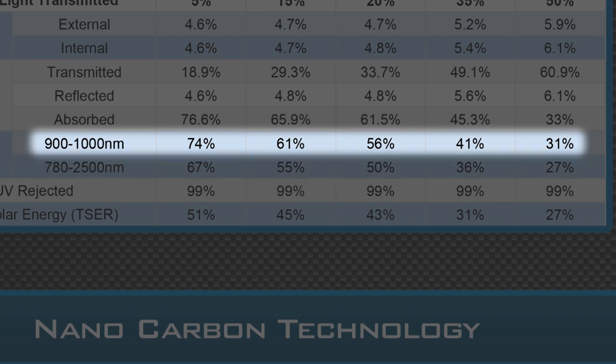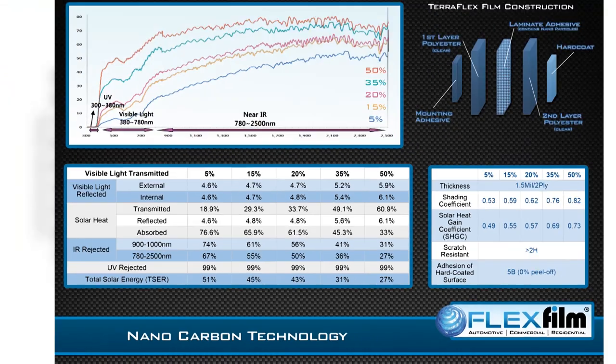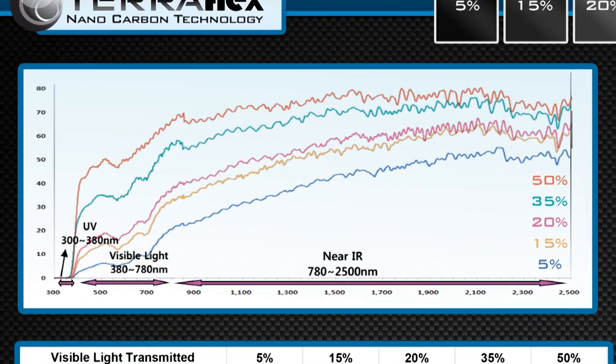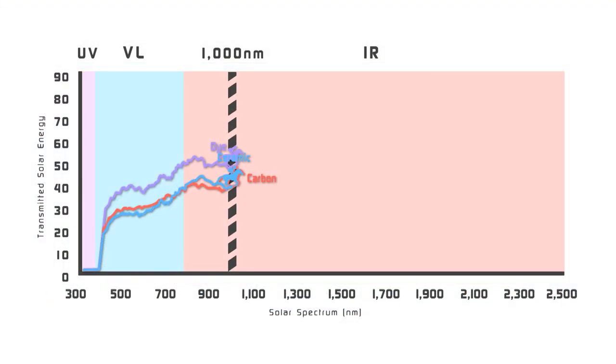The only way we can accurately evaluate the performance of automotive window film without being misled is with a graph, because we can see the whole picture. We don't have to guess, we don't have to predict, and we don't have to mislead.